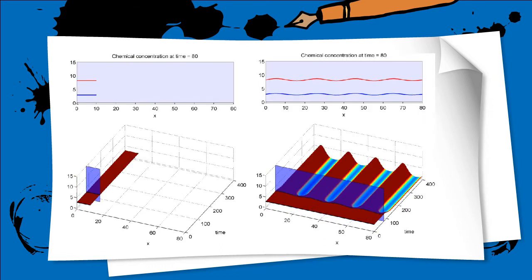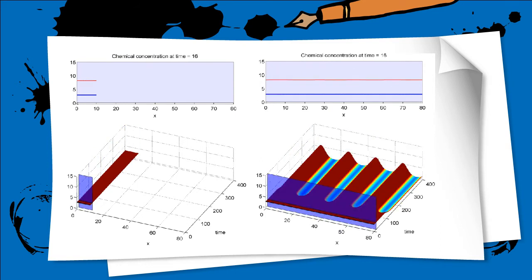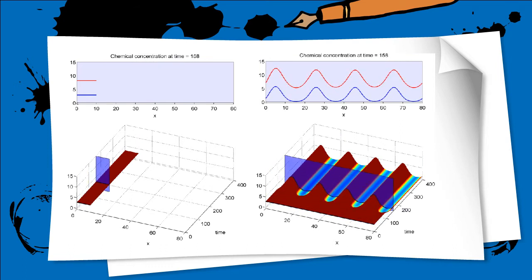We have seen that reaction-diffusion models are sensitive to spatial domain, and in the case of pattern formation, we find that patterns only form on domains that are large enough, as you can see from the two side-by-side animations on the screen.